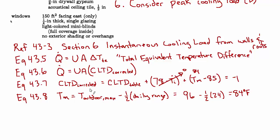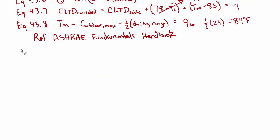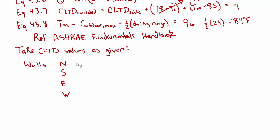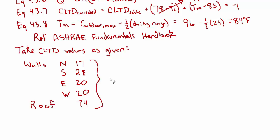If you did have to do the lookup, you'd use the ASHRAE Fundamentals Handbook. In our case we take them as given. For the walls: 17°F delta-T for the north, 28°F for the south, and 20°F each for the east and west. For the roof we have 74°F — a very large number — and of course these are all delta-T values with units of degrees Fahrenheit. With that, we're ready to look at the walls and work out the overall heat transfer coefficient.